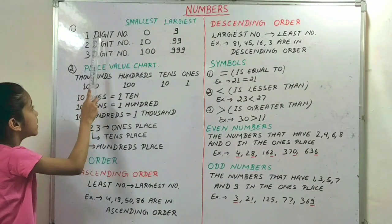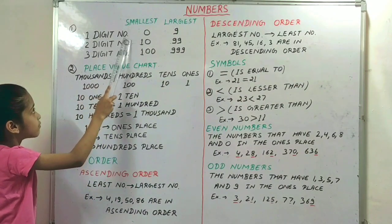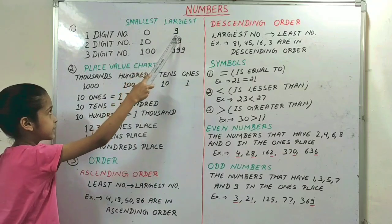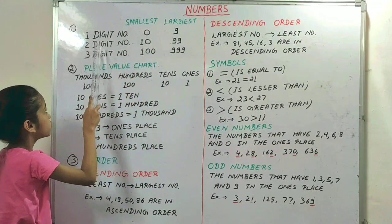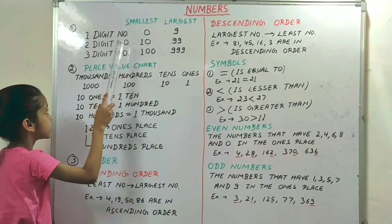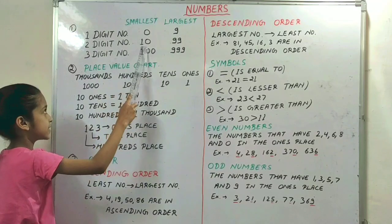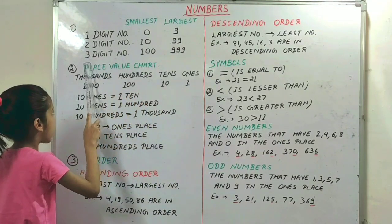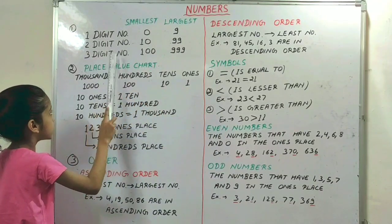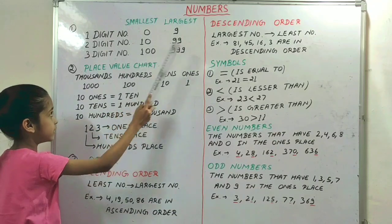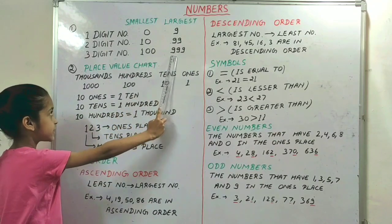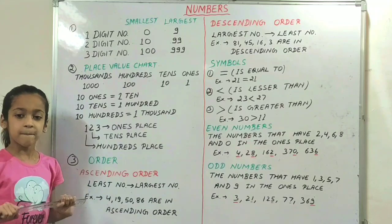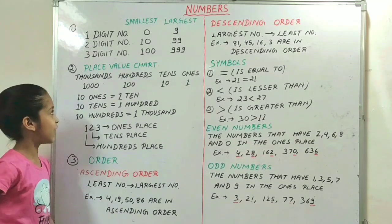Our 1 digit smallest number is 0 and largest is 9. Our 2 digit smallest number is 10 and largest is 99. Our 3 digit smallest number is 100 and largest is 999. So our 2nd basic is place value chart.